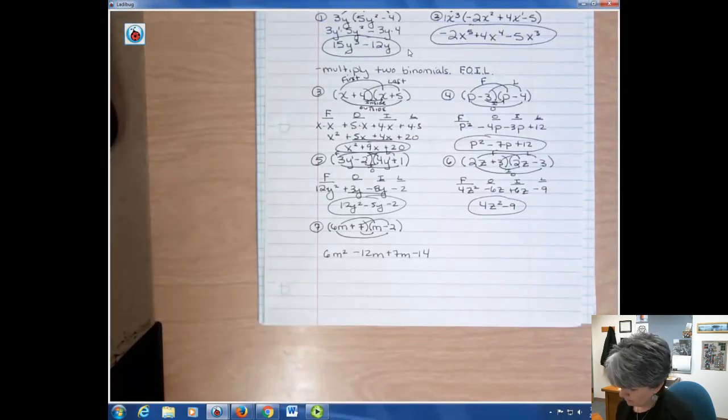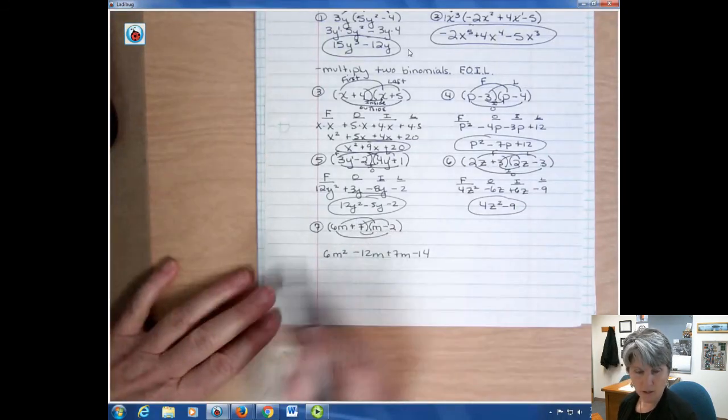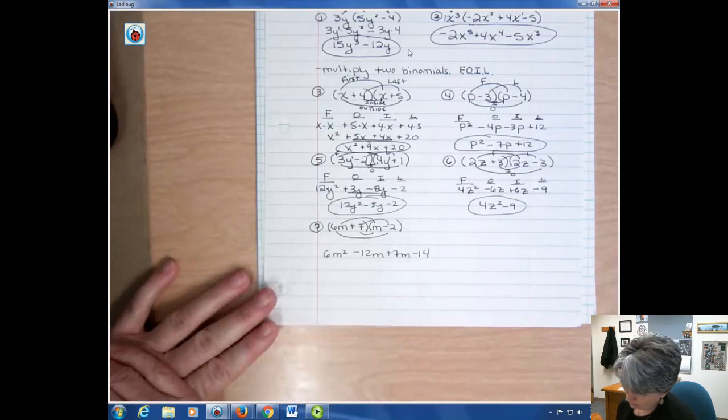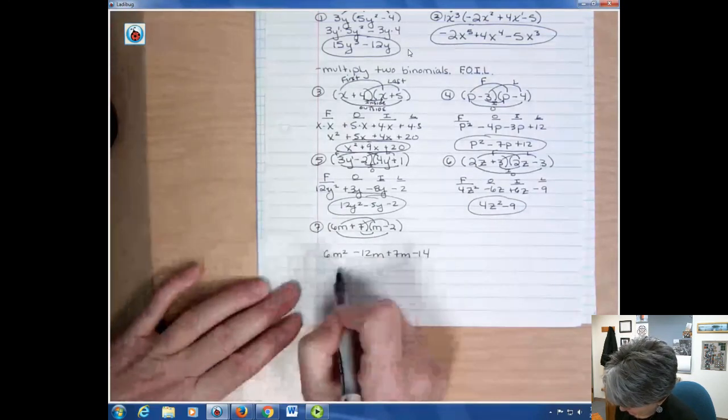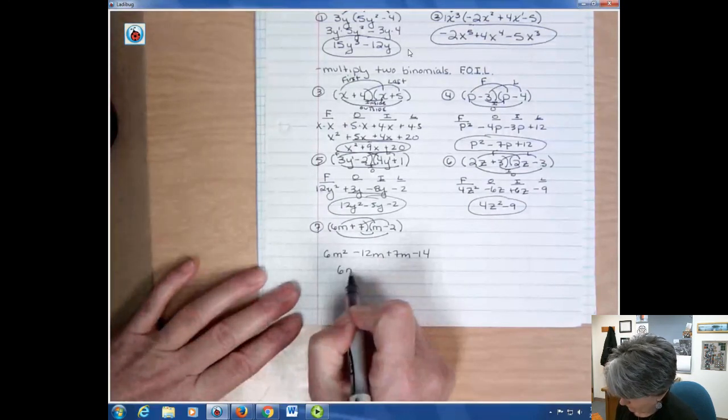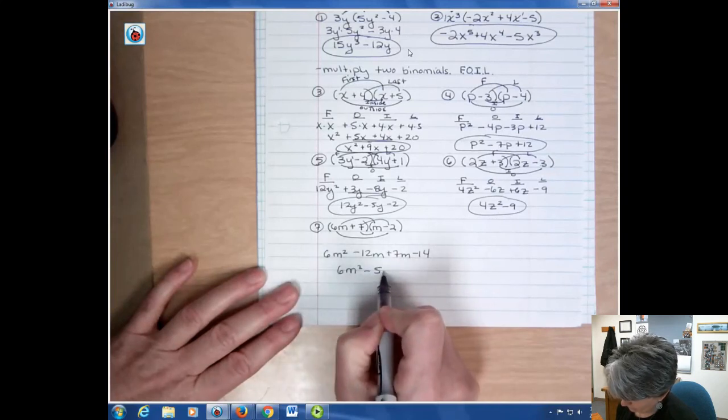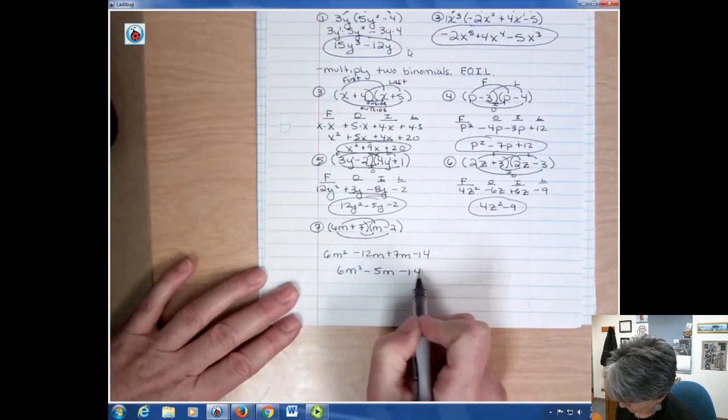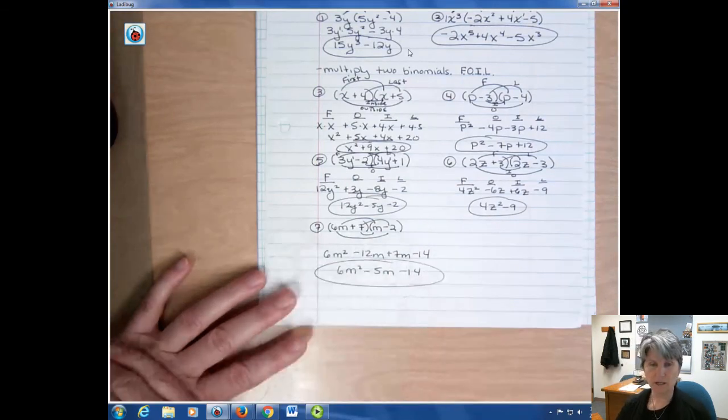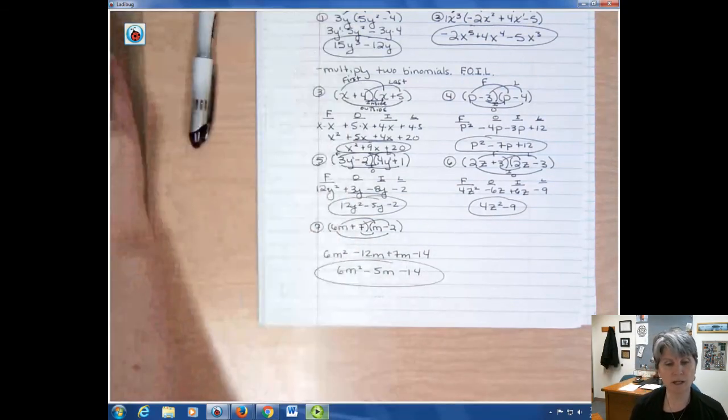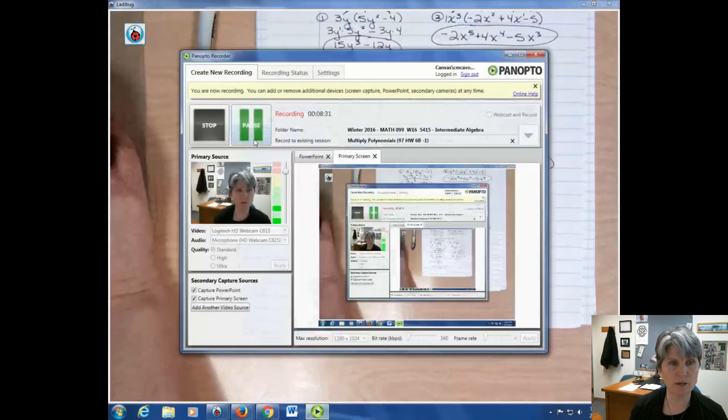Maybe you want to write FOIL up here to make sure you get them all. It's up to you how much of that you need. 6m squared minus 12 and plus 7 is minus 5m minus 14. And that's going to be your final answer. We're going to do more multiplying in the next video, so stick with me and I'll see you next time.